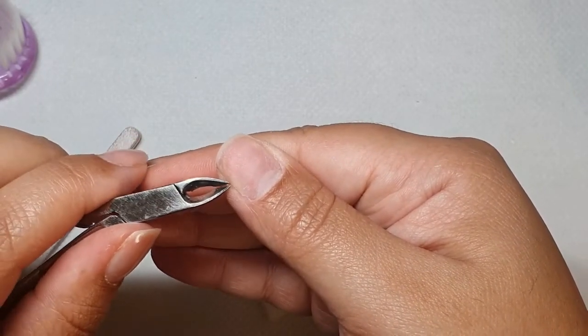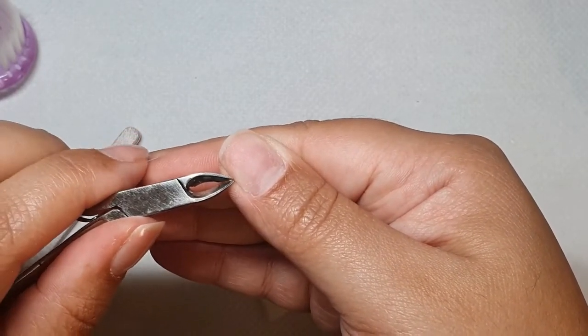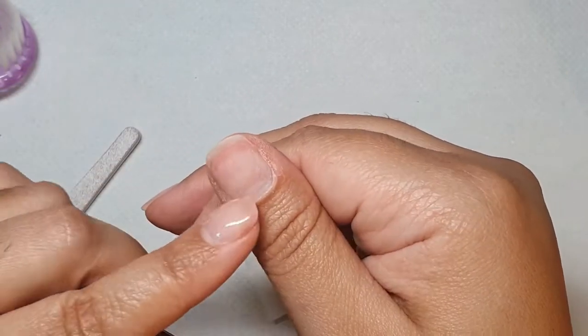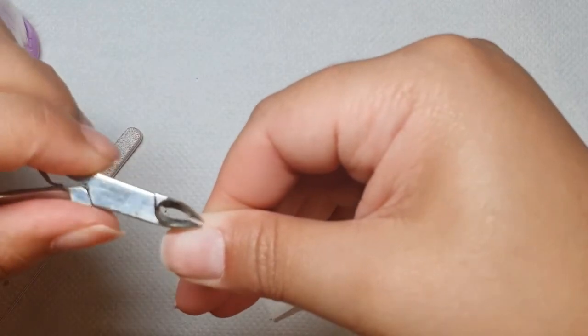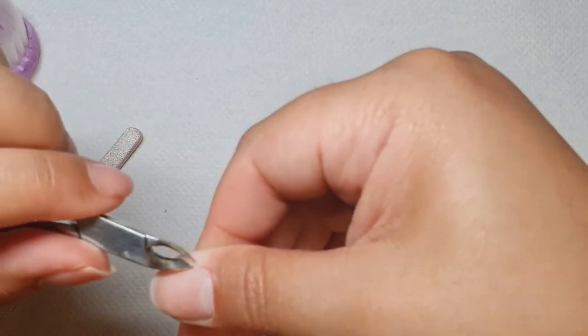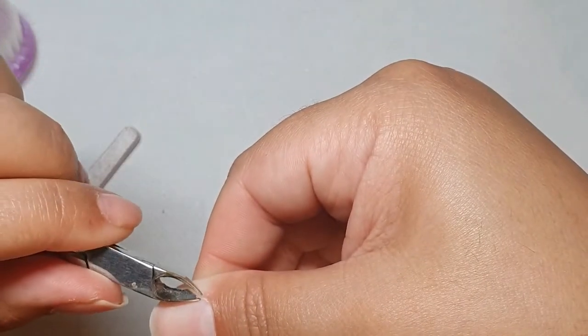Using your nipper now, if you have any hangnails, it's the time to snip them away. I'm only trimming away where I can see little white hangnails, the little skins that stand up on the sides. Those are the ones I'm trimming away.